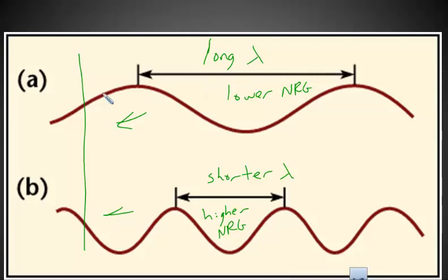If all of these are moving to the left at the same speed, how many crests would pass this point per second? There would be less crests passing in wave A per second than in wave B. When how many crests move per second is the frequency of a wave.